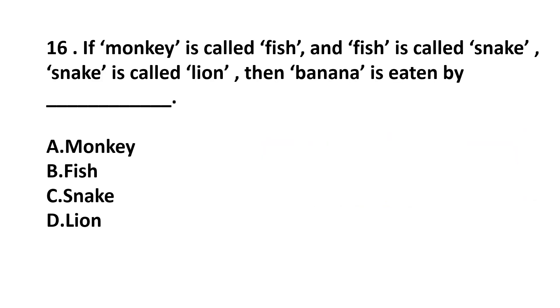Question number 16. If monkey is called fish and fish is called snake, snake is called lion, then banana is eaten by dash. Banana is a food of monkey and monkey is called fish. So banana is eaten by fish. Answer is option B.